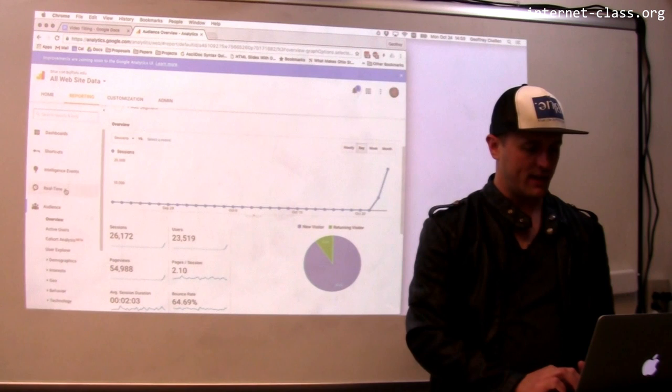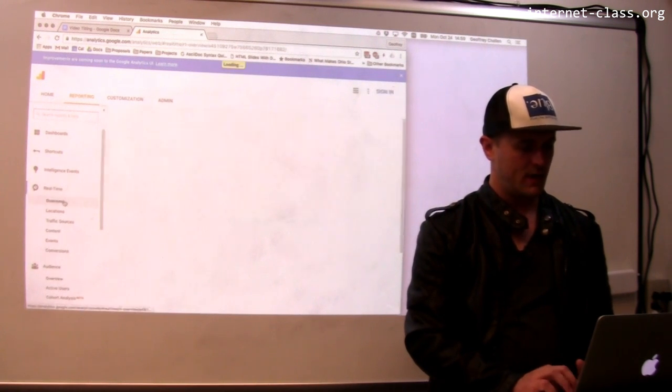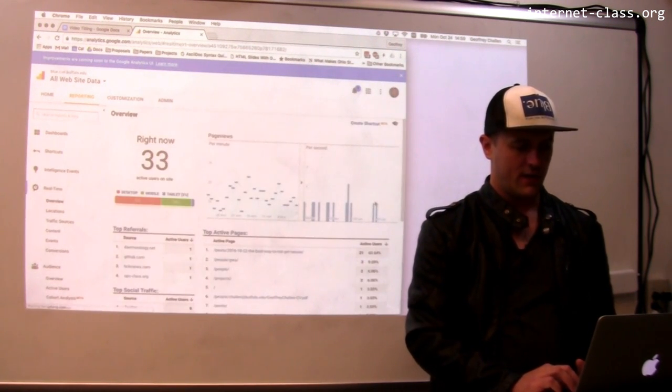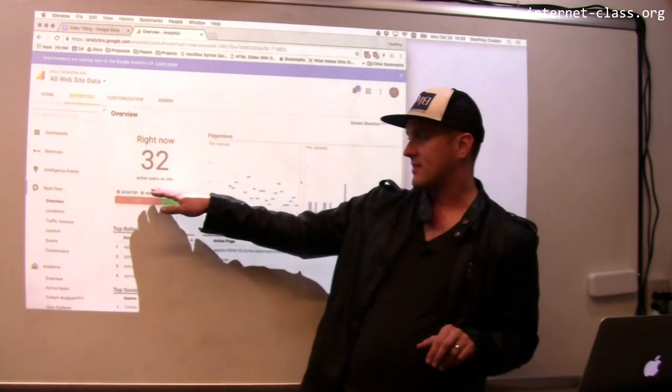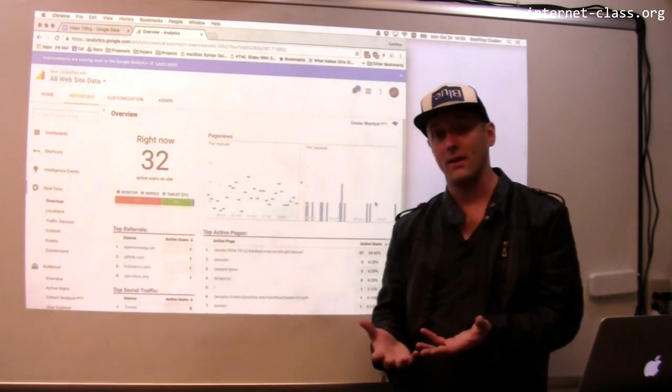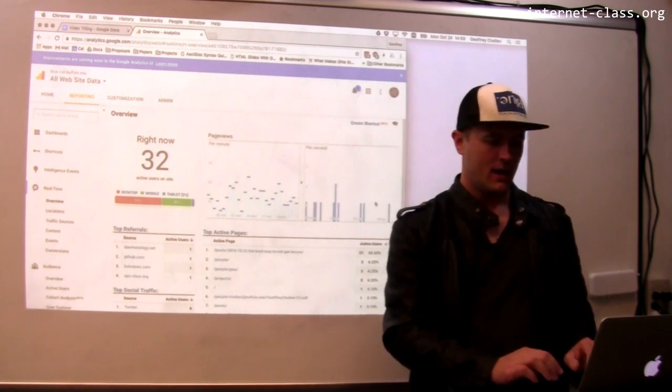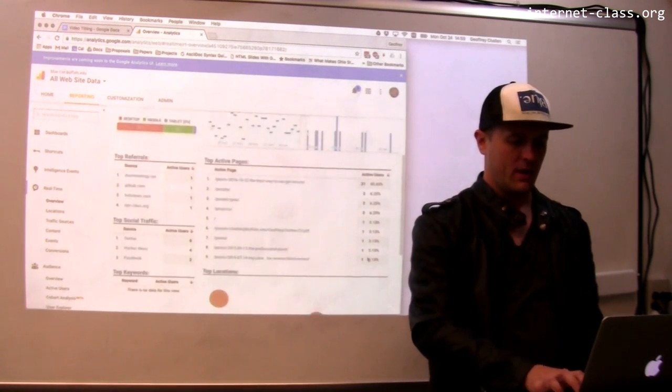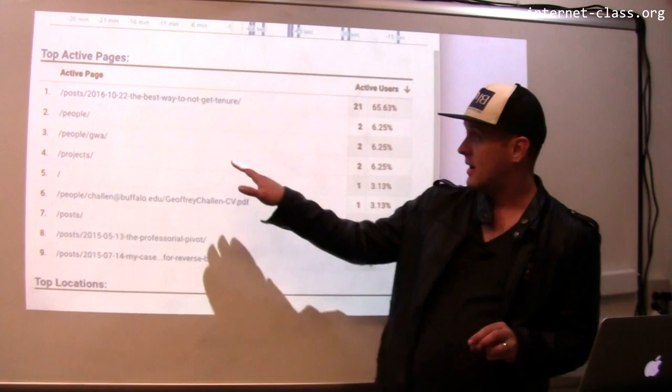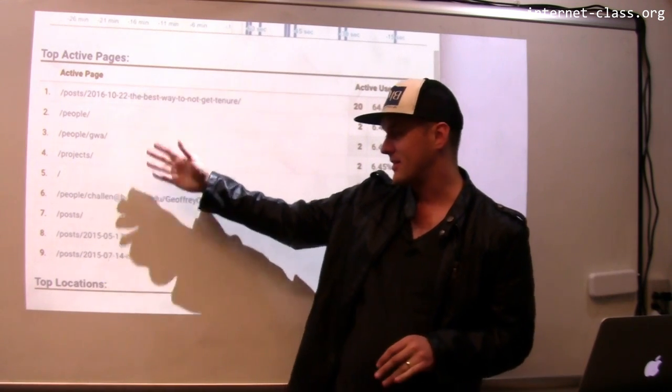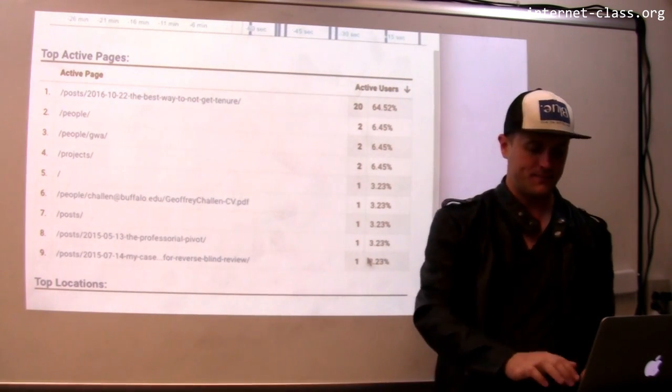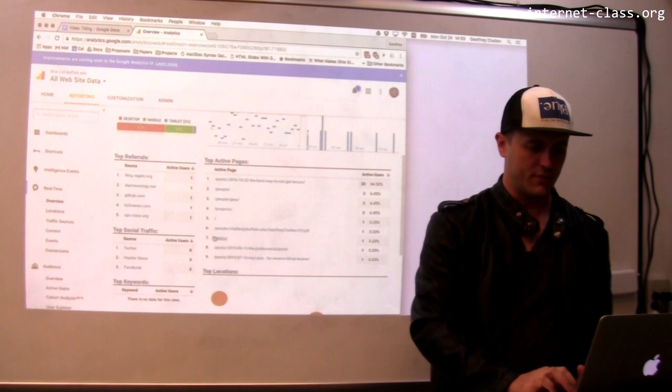Google Analytics has a neat real-time component, so I can look at the number of people that are active on the site right now. Again, this is way larger than it would normally be, normally this would be like one or two. It gives you some information about the pages that people are visiting. This is the post, these are other pages on the site.